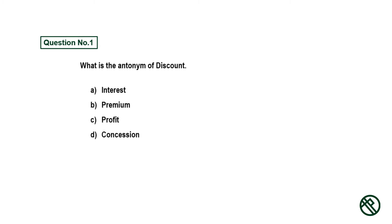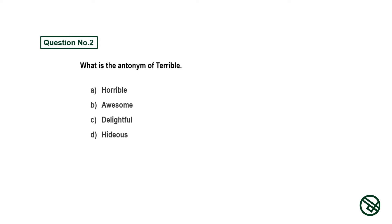Question number one: What is the antonym of 'discount'? Option A: interest. Option B: premium. Option C: profit. Option D: concession. Answer is option B: premium.